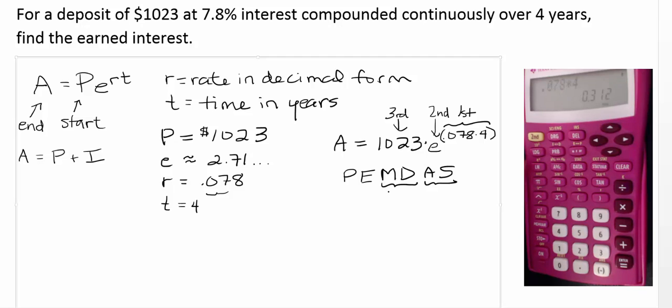So the next thing we'd like to do is to raise E to that power. So I'm going to hit 2nd, and then I'm going to hit E to the x. And now you might notice, oh no, you know that number went away and I need that number.